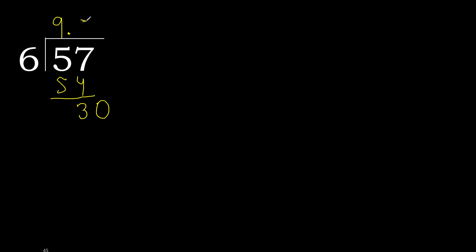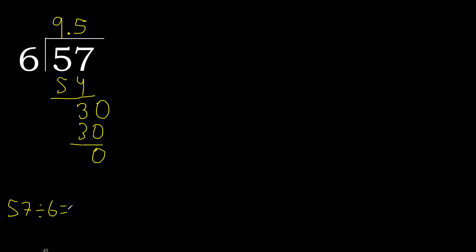6 multiplied by 5 is 30 — not greater. 30 minus 30 is 0. Since the remainder is 0, we finish. Therefore, 57 divided by 6 is 9.5.